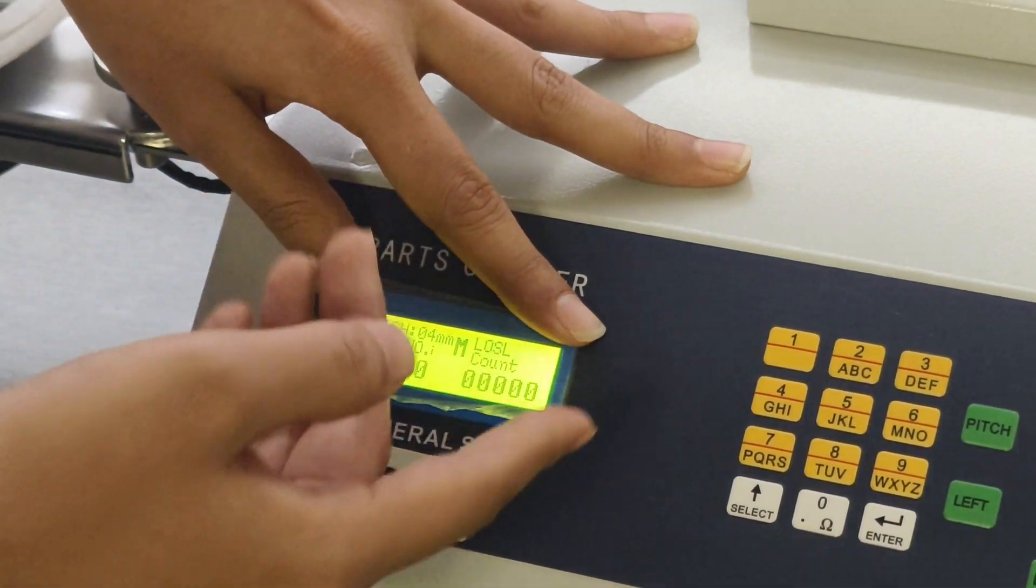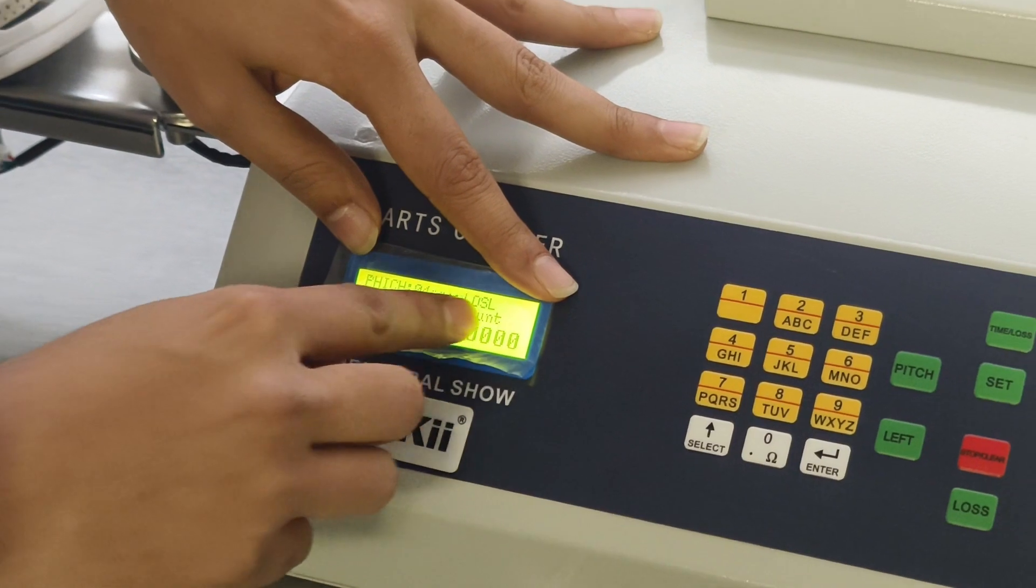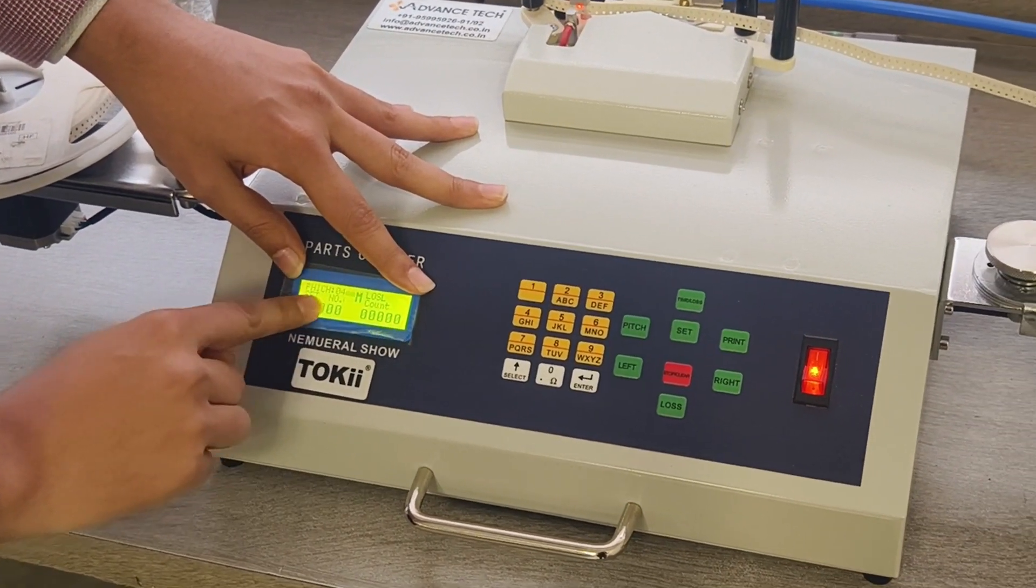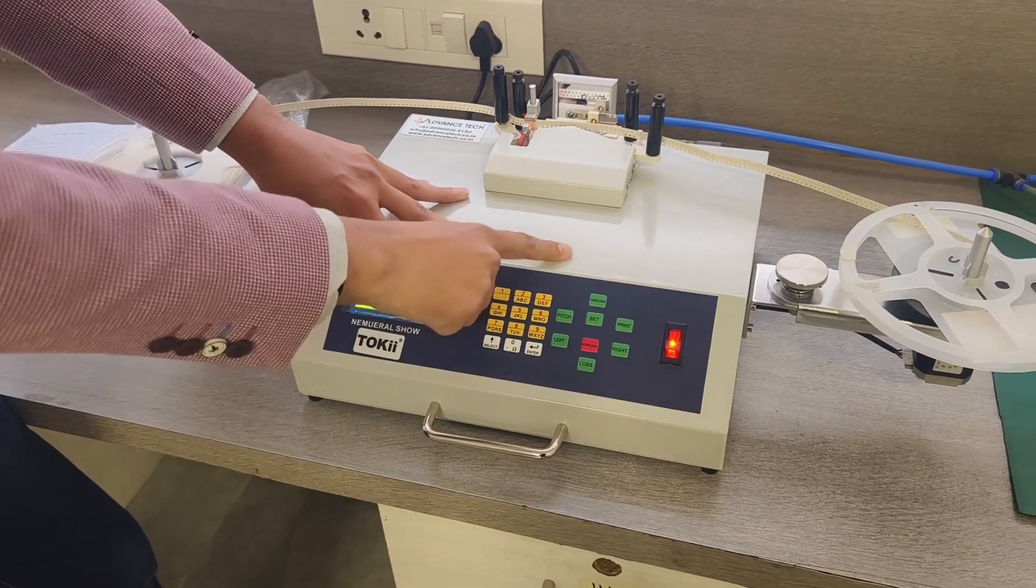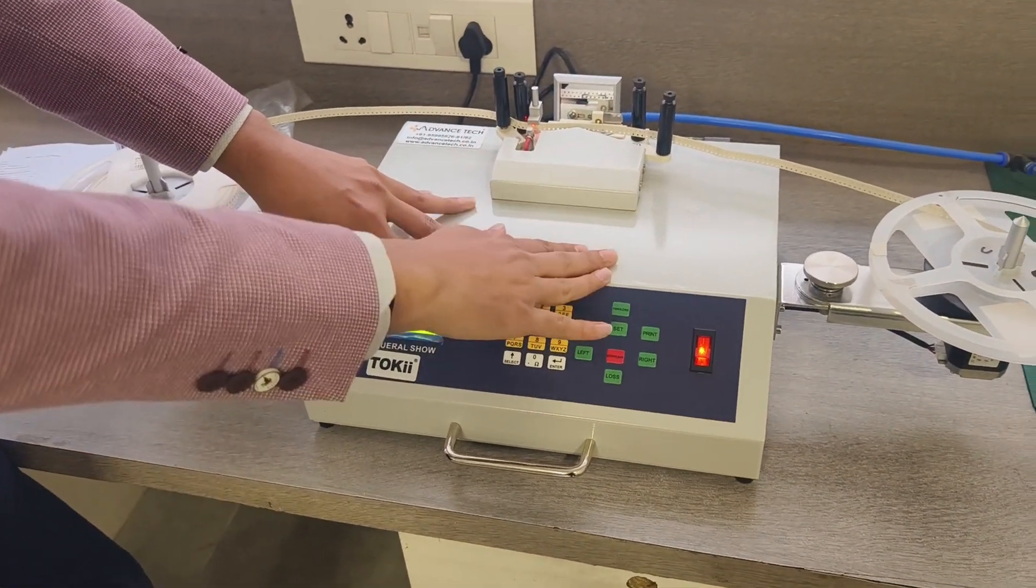Automatic mode means you can set the number of components that you want, you can set the total quantity. Then accordingly, when the machine counts that number of quantity, it will stop automatically.